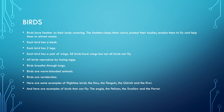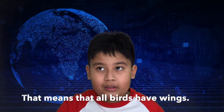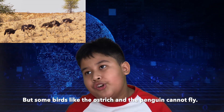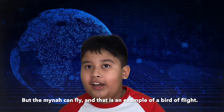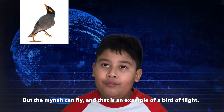Birds have feathers as their body covering. The feathers keep them warm, protect their bodies, enable them to fly and help them to attract mates. Each bird has a beak, two legs and a pair of wings. All birds have wings but not all birds can fly. For example, birds like the ostrich and the penguin cannot fly, but birds like the myna can fly. Those are examples of flying and non-flying birds.